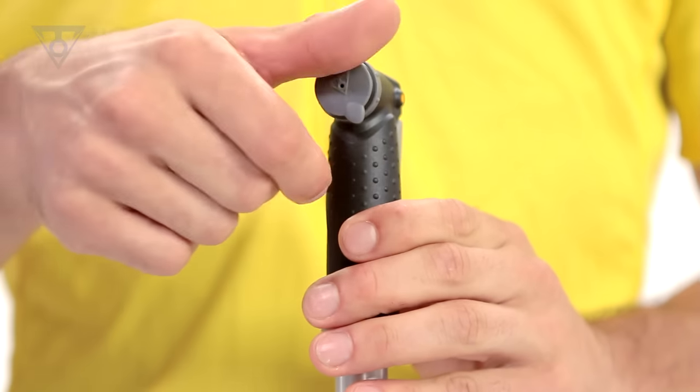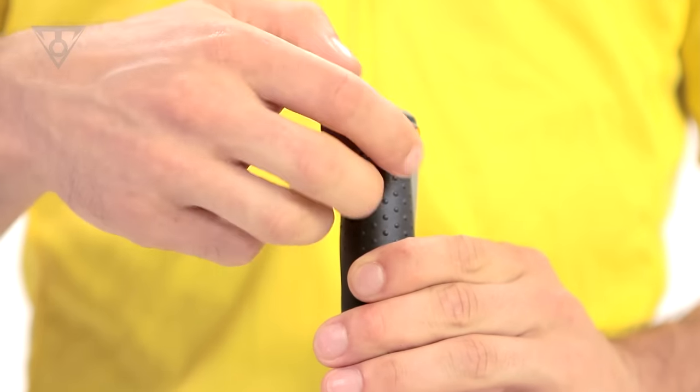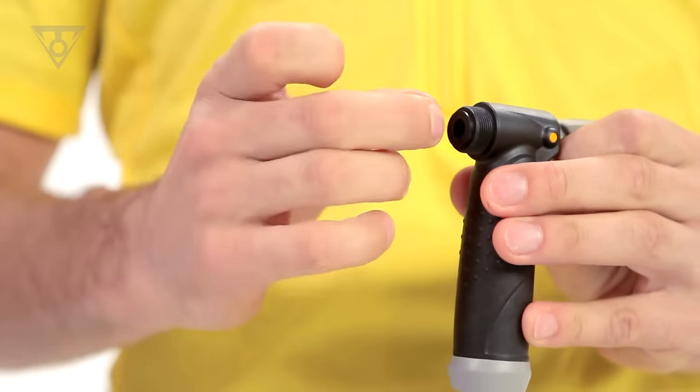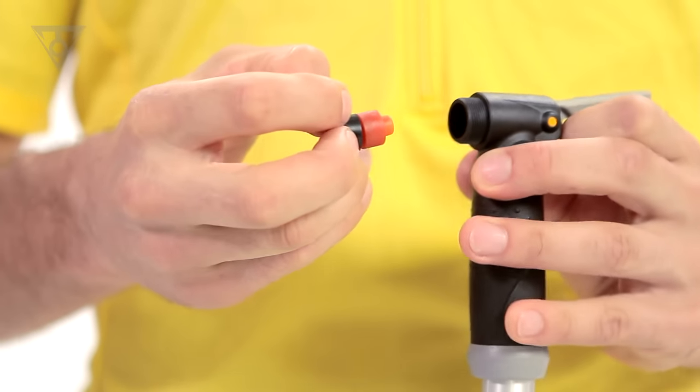To change the internal parts to accept a Presta valve, unscrew the pump head cap. Open the thumb lock lever to help push out the internal parts.